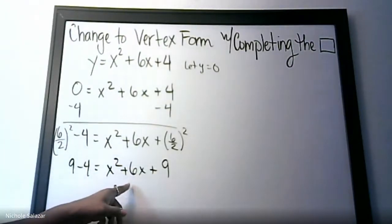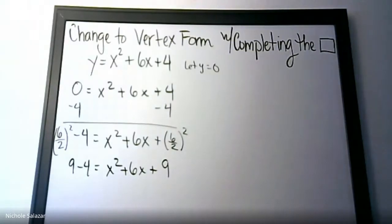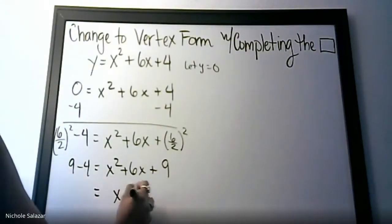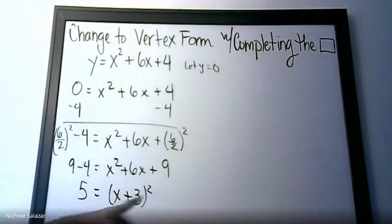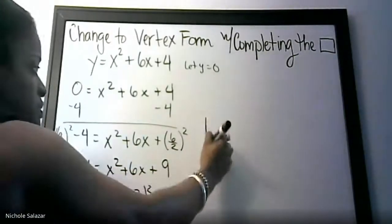Here we have a perfect square trinomial and we know that is equal to x plus 3 squared, and over here that's 5. Now you could use the box or diamond to factor it if you didn't know.